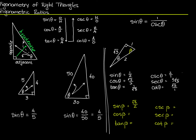The cosine of beta is the side adjacent to beta, which is 1, divided by the hypotenuse. And the tangent of beta is the opposite divided by the adjacent. Since I've put these in order, I can flip them: cotangent is the reciprocal of tangent, so 1 over square root of 3. Flip cosine over and you get secant. Flip sine over and you get cosecant.